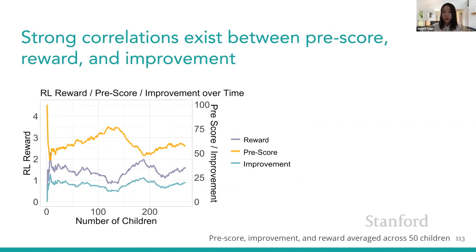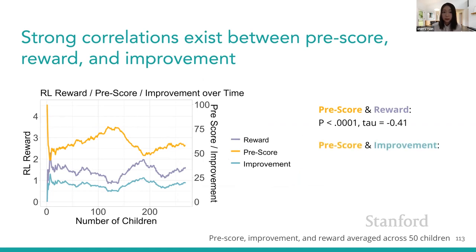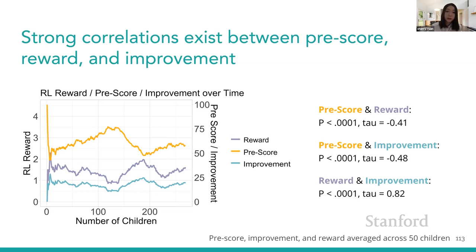I also found strong correlations: between children's pre-score and RL reward, tau was minus 0.4; between pre-score and improvement, tau was minus 0.5; and between reward and improvement, a positive correlation with tau of 0.8 — which makes sense since our reward function was designed to maximize children's improvement. An important takeaway is that we should better control the distribution of incoming children to make the RL algorithm converge faster.